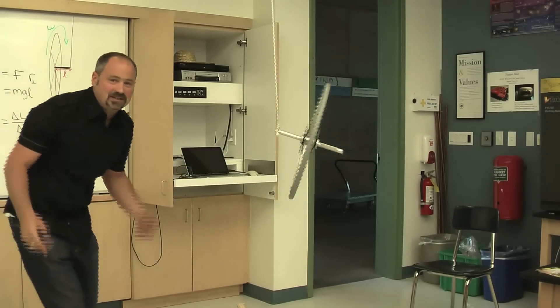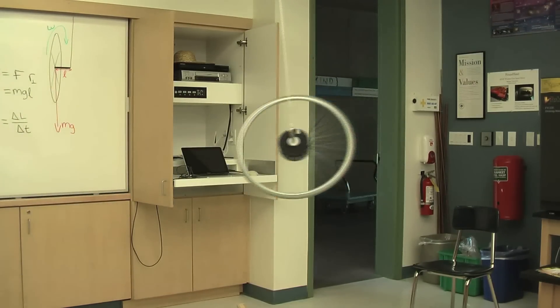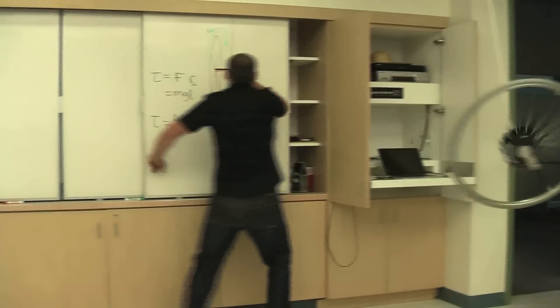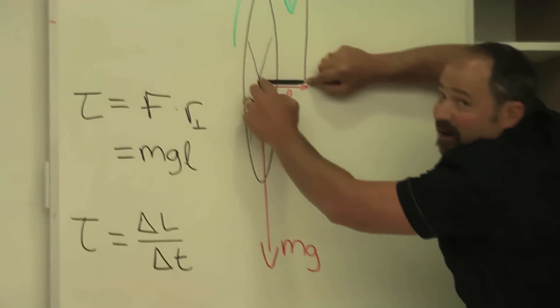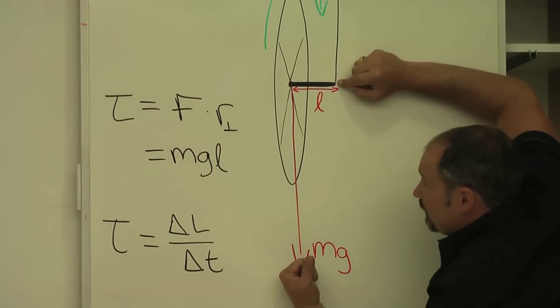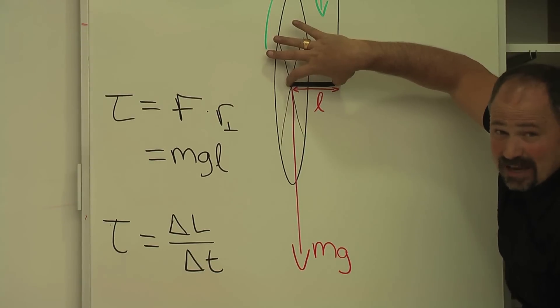It starts precessing. What's going on here? It's actually very interesting. The wheel is attached here, but the center of mass is there. So you have the force of gravity pulling down, and this much distance from the rotation axis.